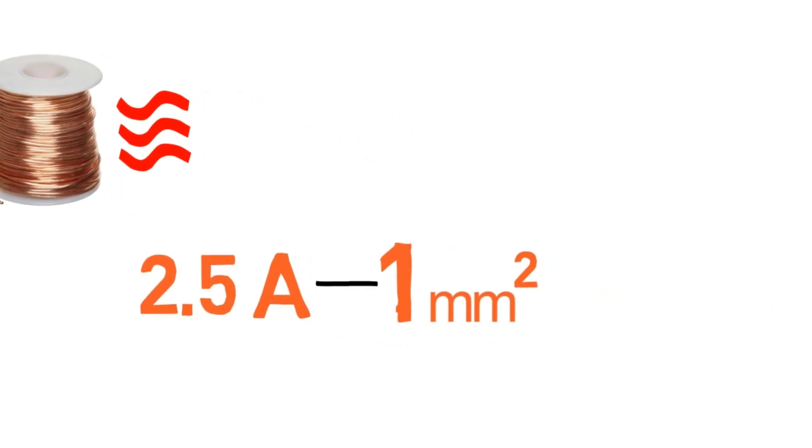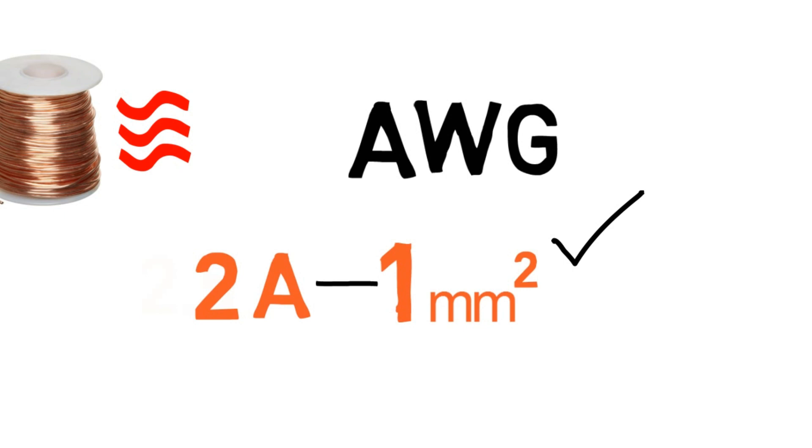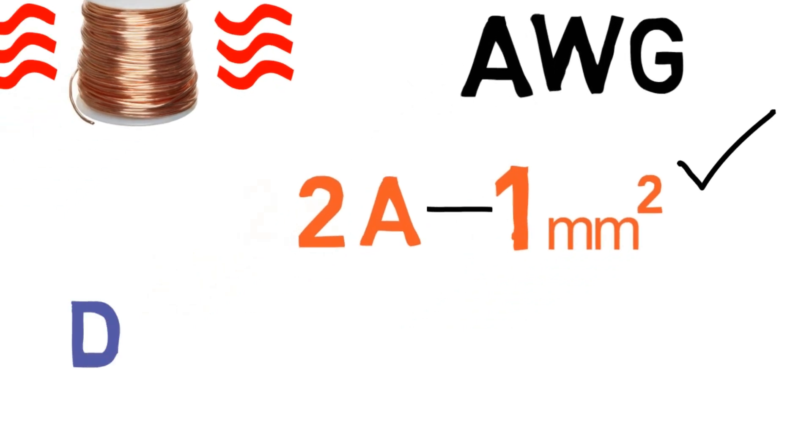According to our design, 2 amps is the load current. The wire having 1 mm square cross-sectional area will be sufficient for us. For more details you can see the American Wire Gauge chart for reference. This wire will have the diameter of 1.12 mm.